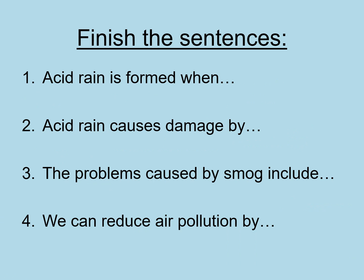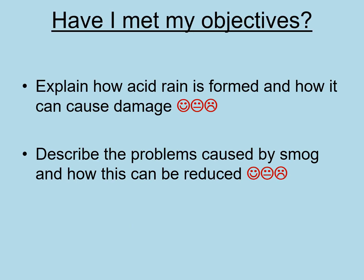To finish off, have a look at these sentences and try to complete them — you can write them down or talk through them since you've done a lot of writing this lesson. Pause the video, finish the sentences, then we'll get ready to end this lesson. Have you met your objectives? If you were able to correctly and easily finish those sentences, you should have. If you can explain how acid rain is formed and how it can cause damage, draw a smiley face next to that objective — or a middle face if unsure, or a sad face if you don't get it. Do the same for the second objective: can you describe the problems caused by smog and how this can be reduced?